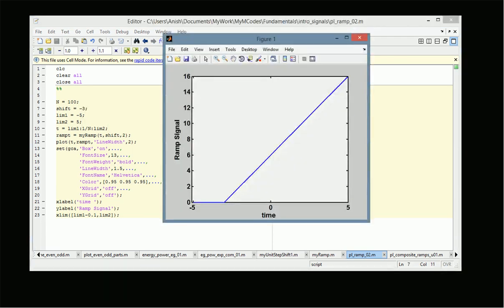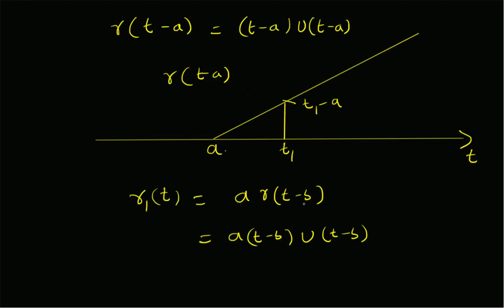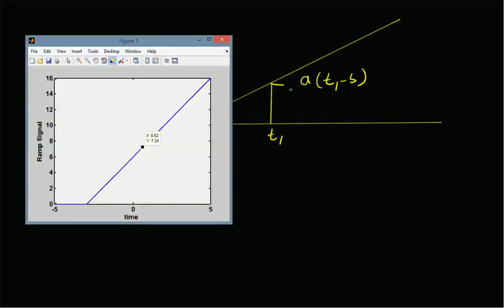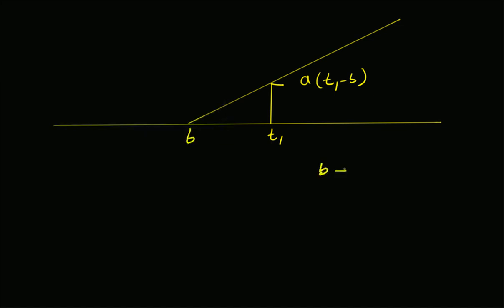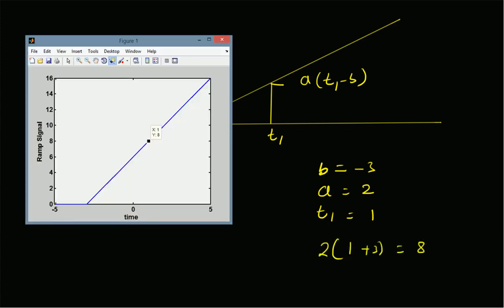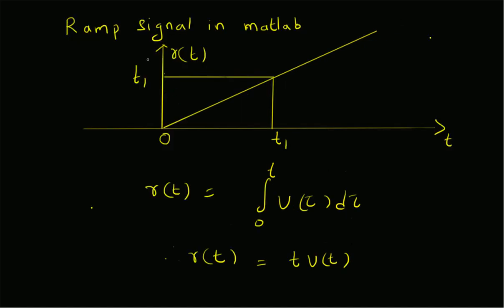Now we apply both scaling and shifting with a equal to 2 and b equal to minus 3. For time t1 equal to 1, b equal to minus 3, and a equal to 2, we are supposed to get 2 times (1 minus (minus 3)), which is 2 times 4, equal to 8. We can clearly see that the value at t equal to 1 is indeed 8, hence verified.